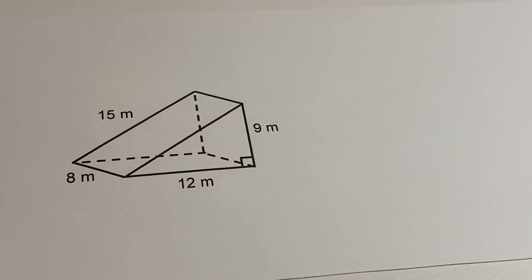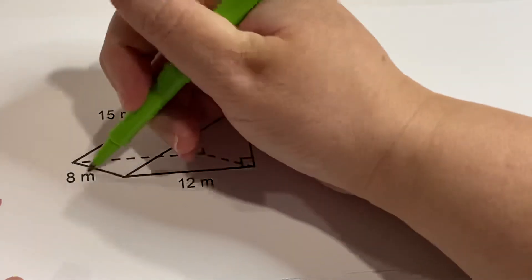Okay, so let's say you're having a hard time imagining how to unfold it as a net. We can look at the different parts of the triangle, the different faces, and we can identify them individually.